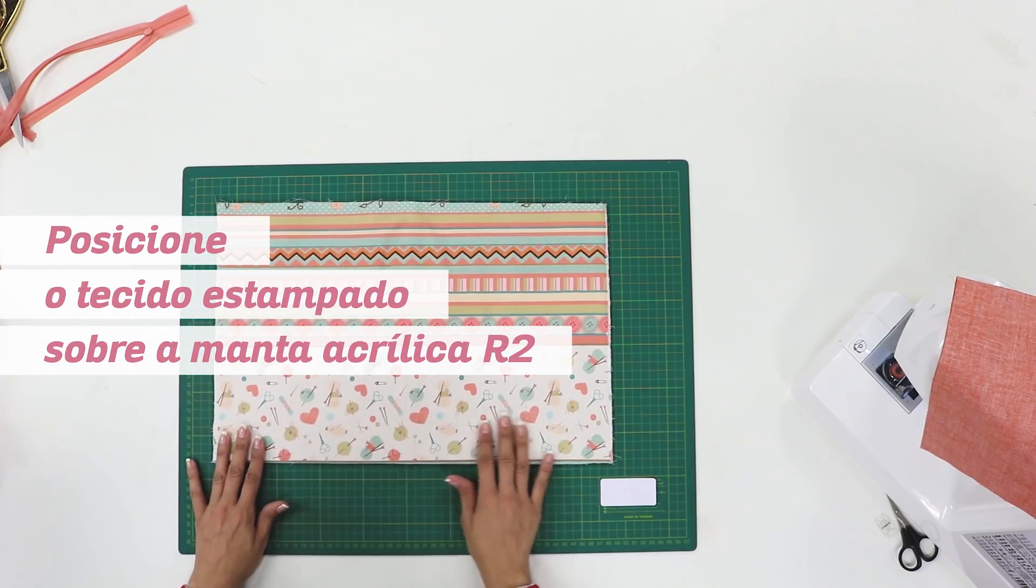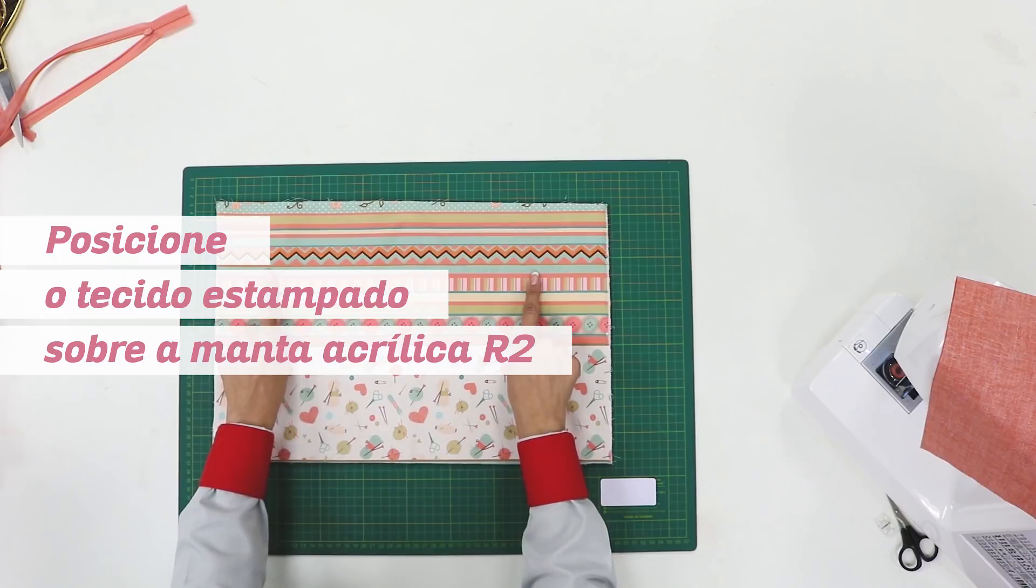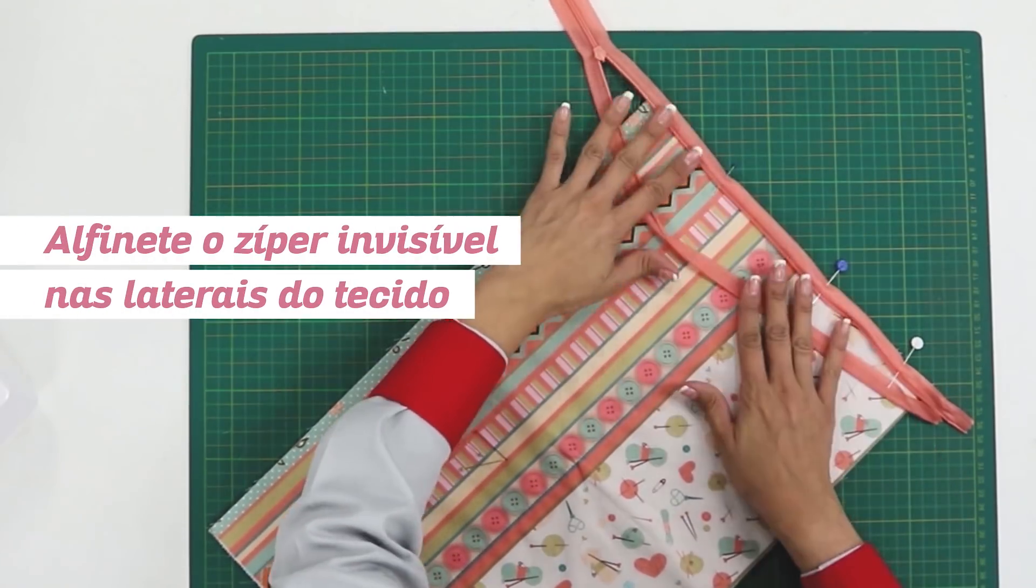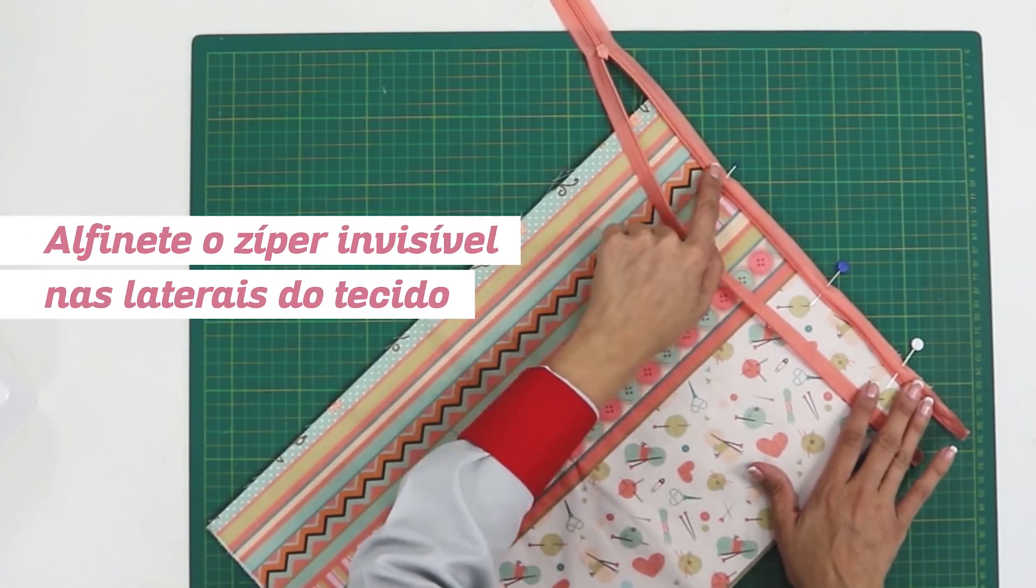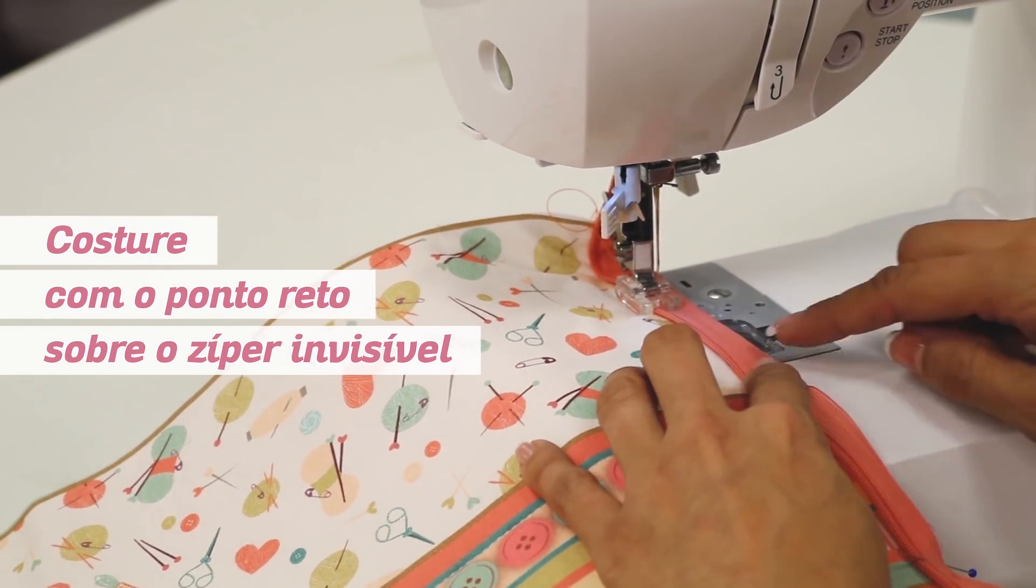Posicione o tecido estampado sobre a manta acrílica R2. Alfinete o zíper invisível nas laterais do tecido. Costure com um ponto reto sobre o zíper invisível.